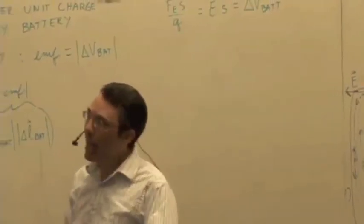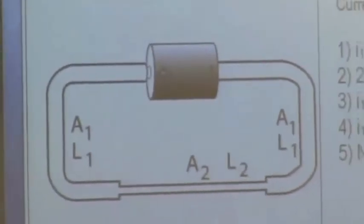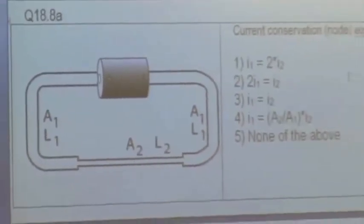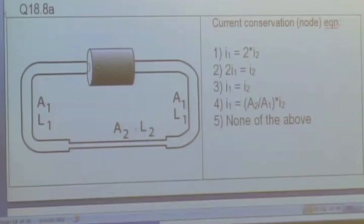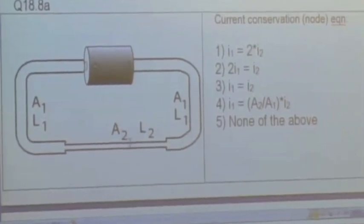So you have a battery connected to two thick wires and a thin wire. And the thick wire has area A1 and length L1. There's two of them, A1, L1, A1, L1. And then the thin wire has area A2 and length L2.